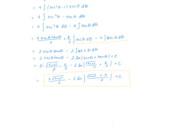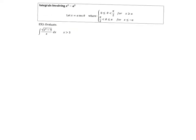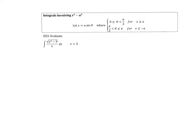We've looked at two types, and we're going to look at the third type. We had a squared minus x squared, then a squared plus x squared, and now the last example is going to be x squared minus a squared. Our substitution on x is going to be secant. In this example, a is equal to three, and we're going to let x equal three secant of theta.